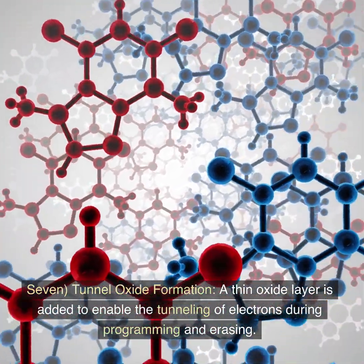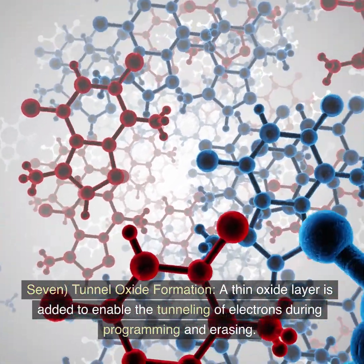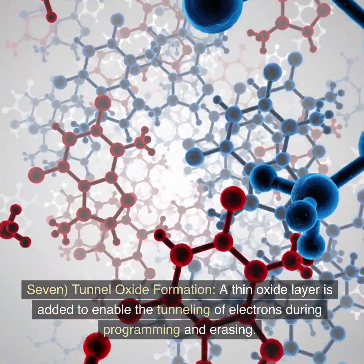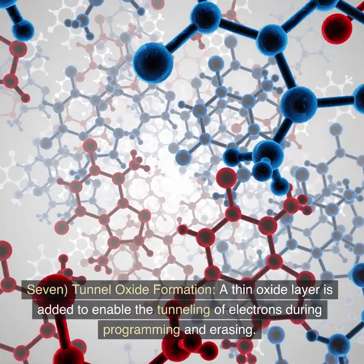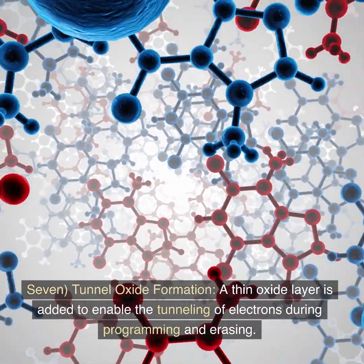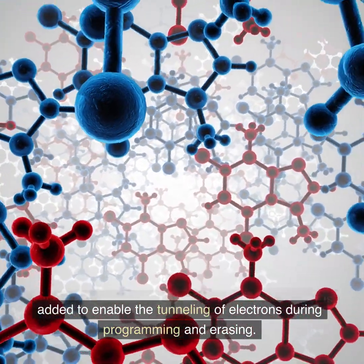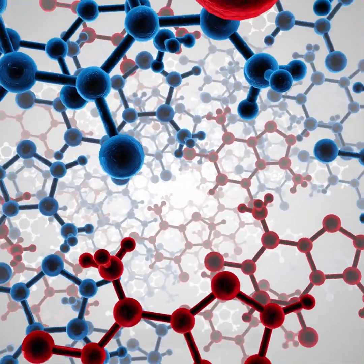Step 7: Tunnel Oxide Formation. A thin oxide layer is added to enable the tunneling of electrons during programming and erasing.